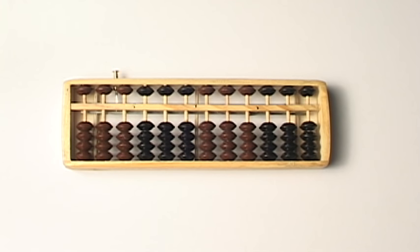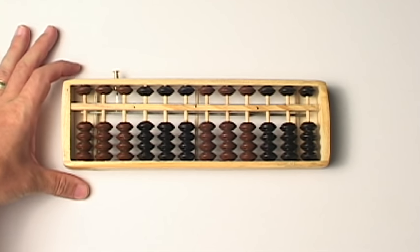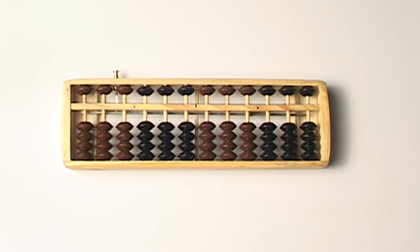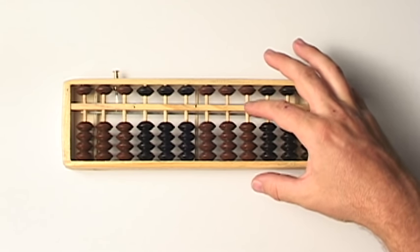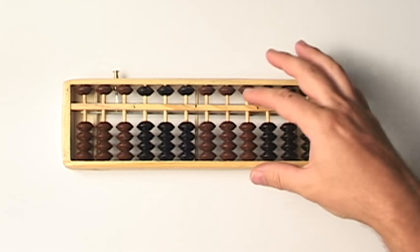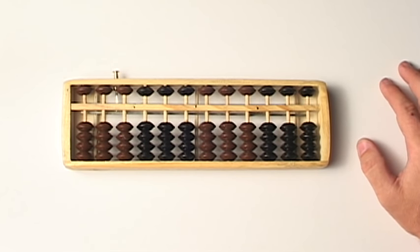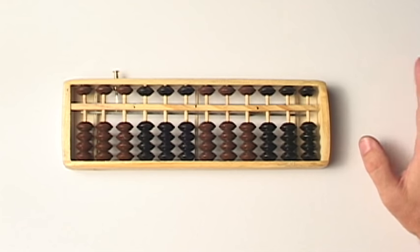Now, what number do we start with when we're counting with numbers? Some of you may have said one. Actually, the first number is a very important number, and that number is zero. Right now, what you see with the abacus in its cleared state says zero. There are no beads touching the center beam or the reckoning bar, and that number indicates zero.